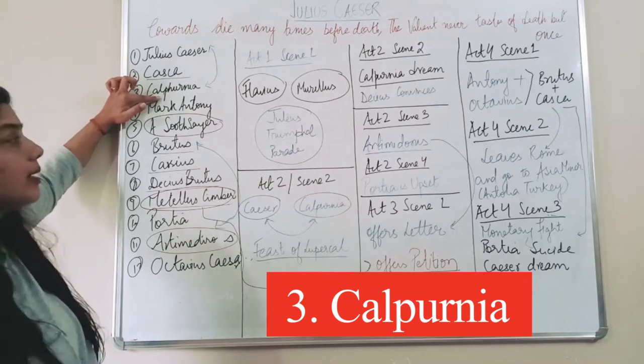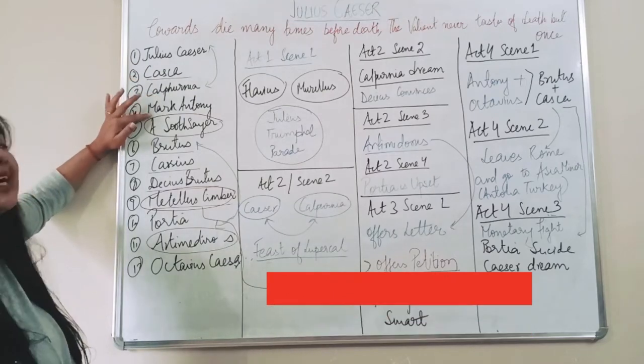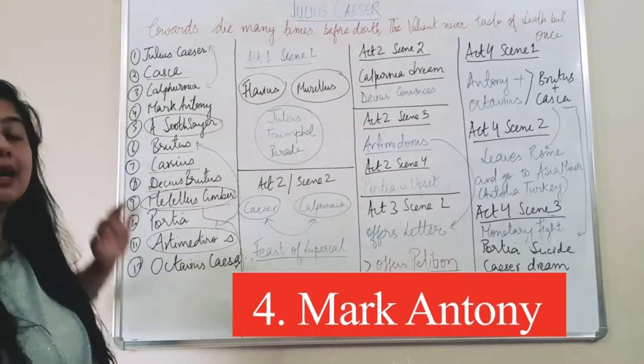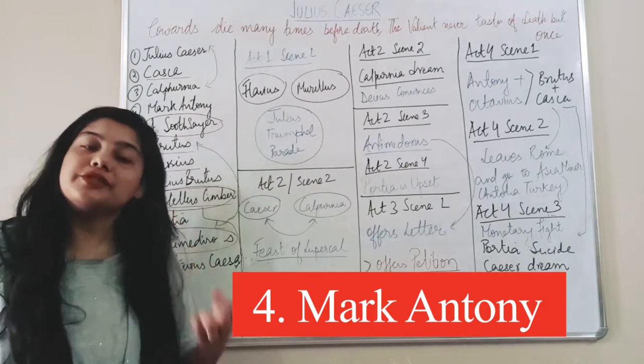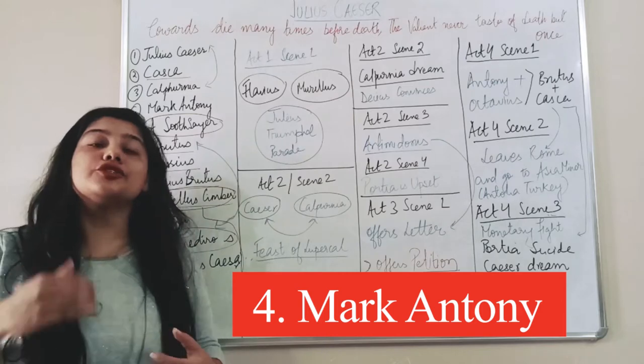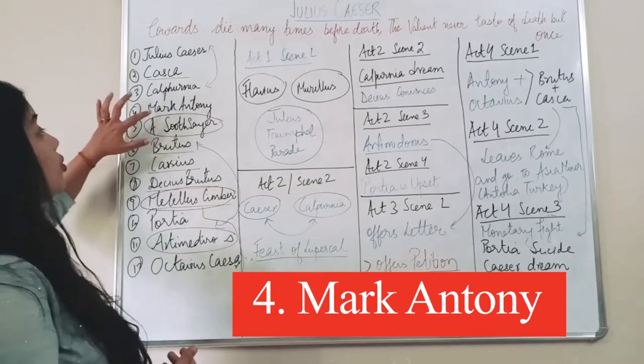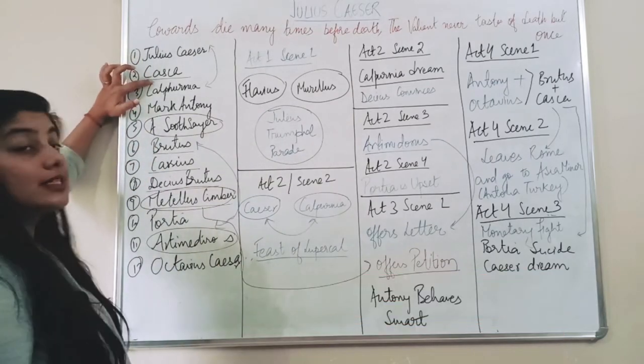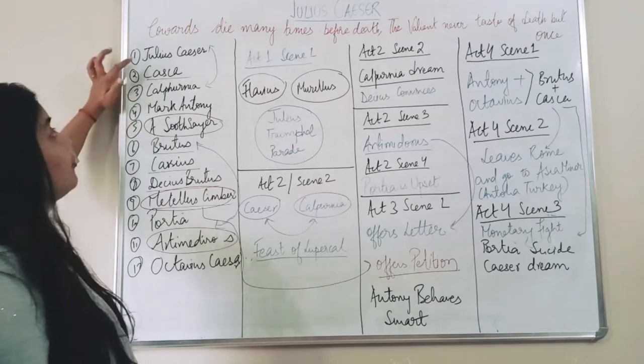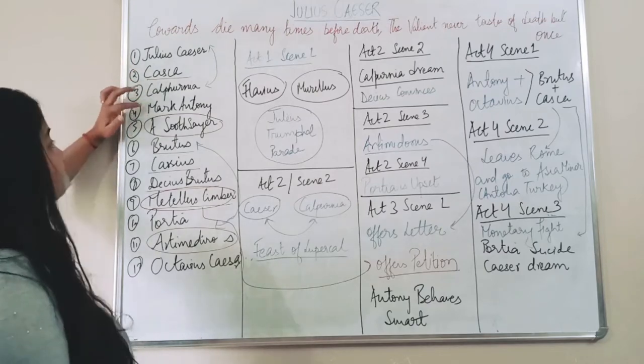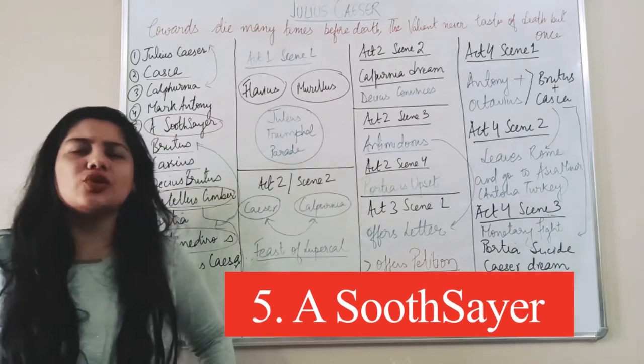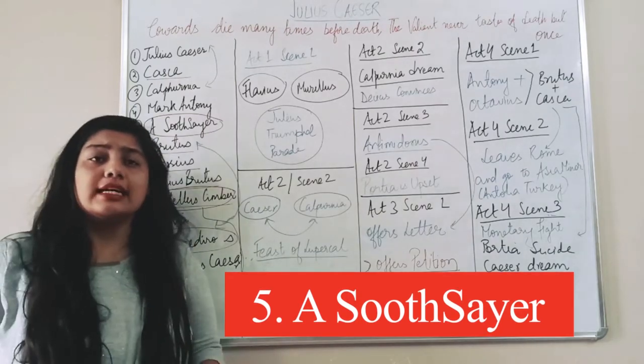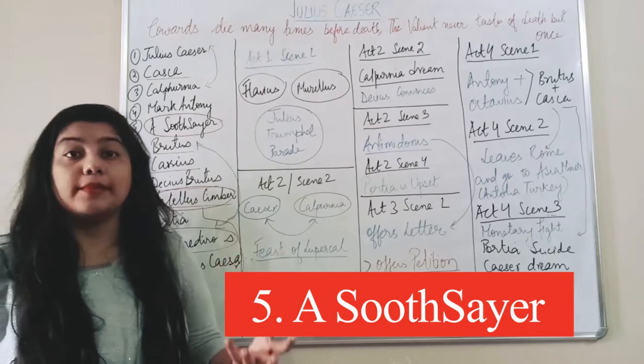Now come to Mark Antony or Marcus Antony. Mark Antony was the follower of Julius, he was the best friend, he was a companion and he literally used to follow, he was his supporter. Casca was in opposition, Antony was his supporter and follower. A soothsayer, soothsayer usually we call them priest or somebody who tells about, who gives you a warning that this is going to happen in your life.